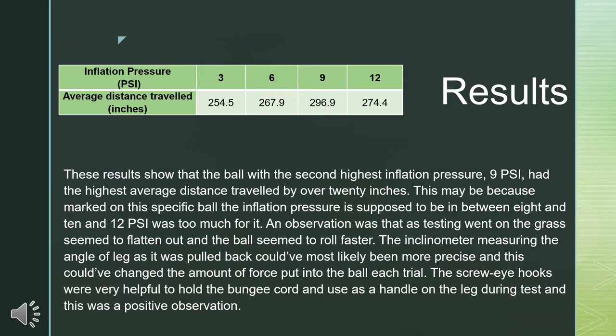An observation during testing was that as testing went on, the grass seemed to flatten out and the ball began to roll faster. Another observation was that the inclinometer measuring the angle of the leg as it was pulled back could have been more precise, and this could have slightly changed the amount of force put into the ball each trial. A positive observation was that the screw eye hooks were very helpful to hold the bungee cord and also use as a handle on the leg during testing.